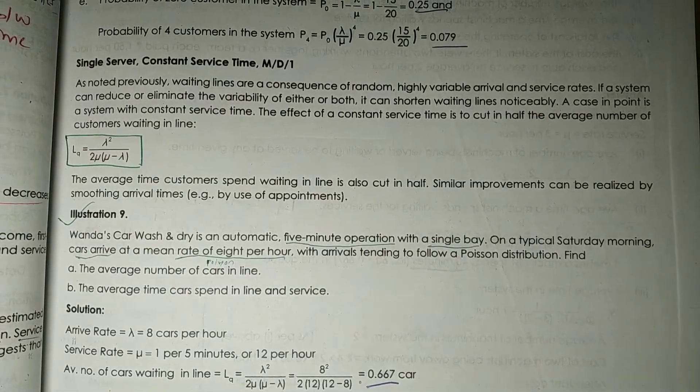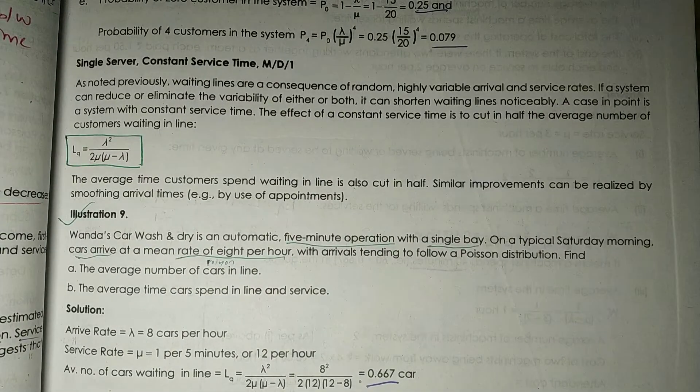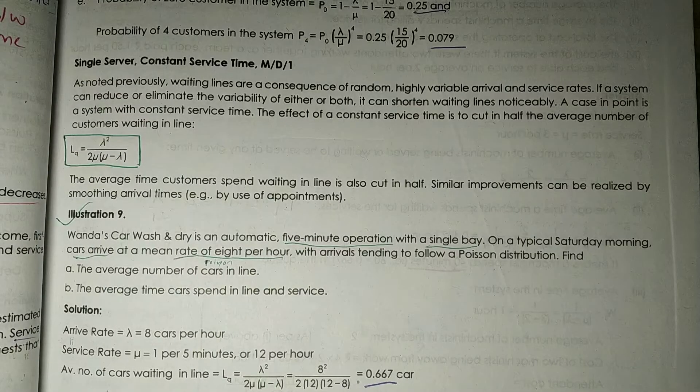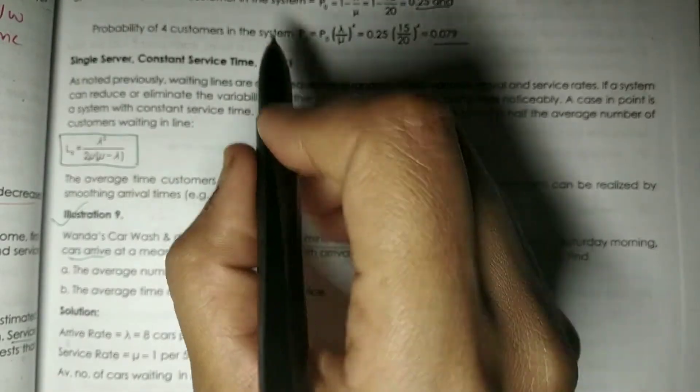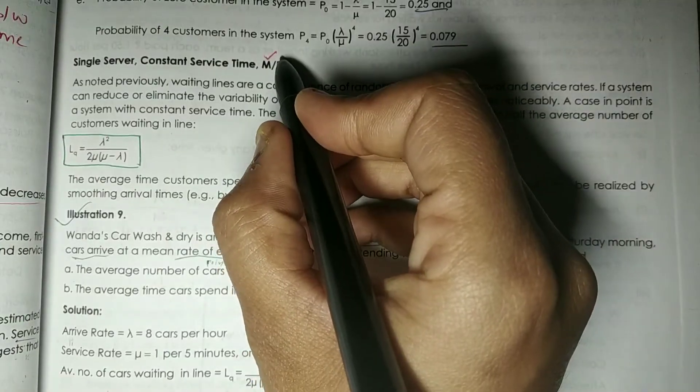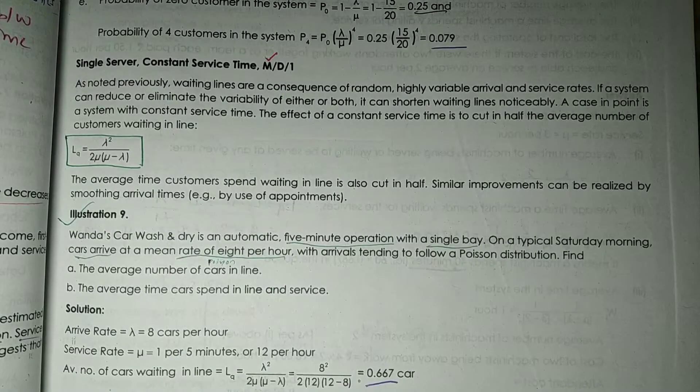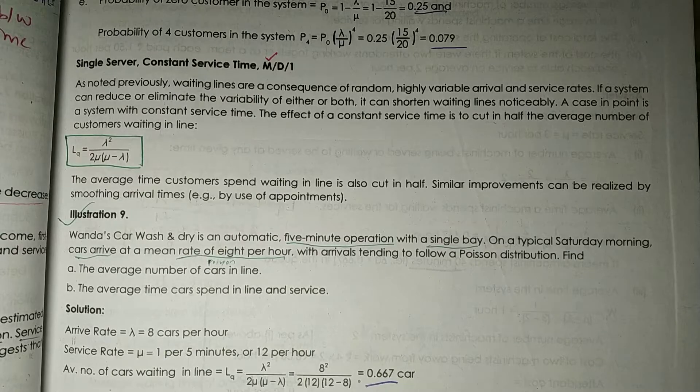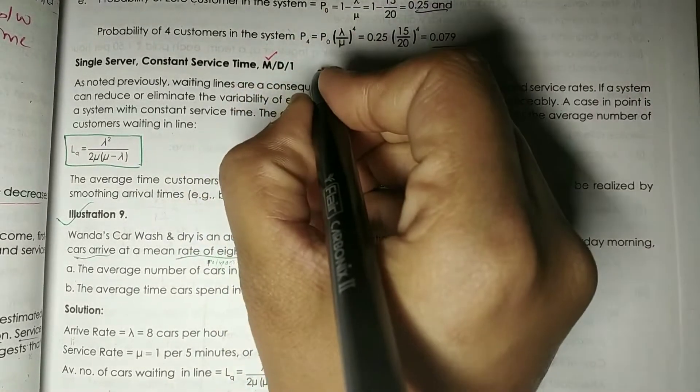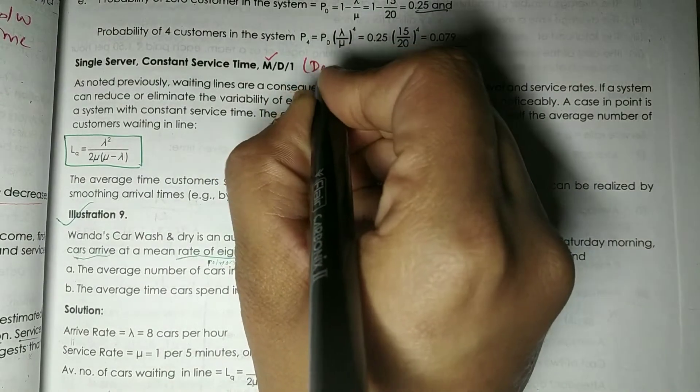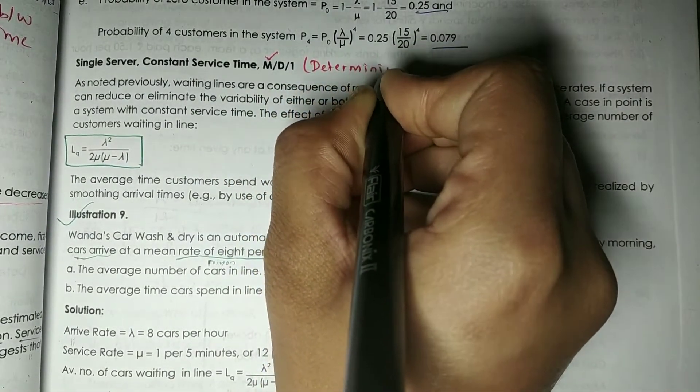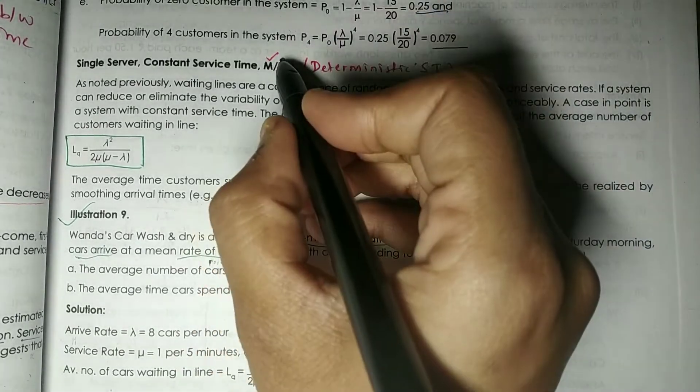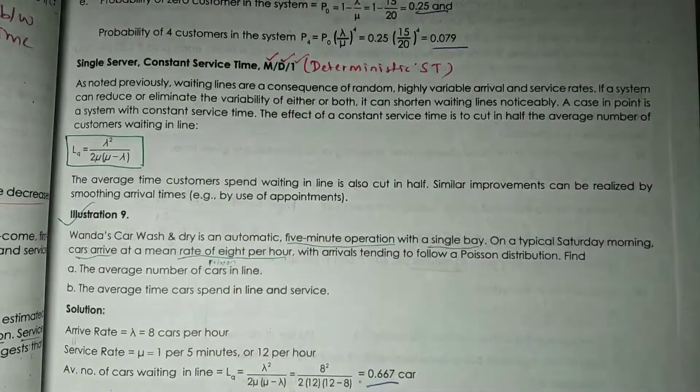Hi everyone and thank you so much for watching my channel, the Witty Turtle. In this video we will understand single server constant service time, that is your M. This is your single server and we have a constant service time, so that is known as your deterministic service time. That's why it is written as D, and we know only one server is there.